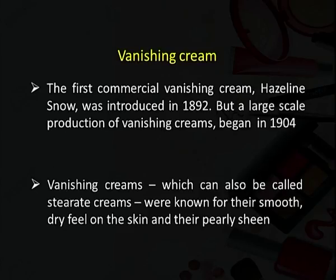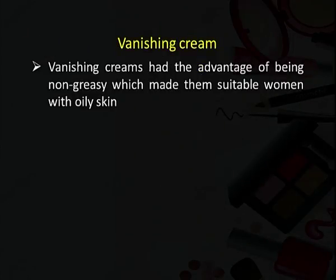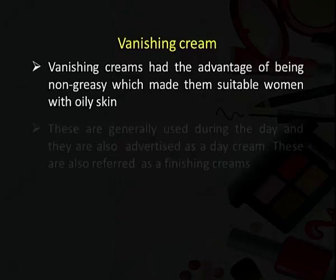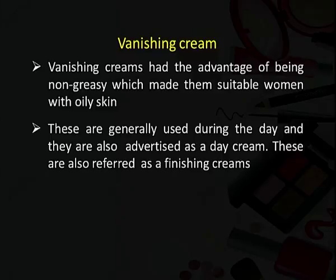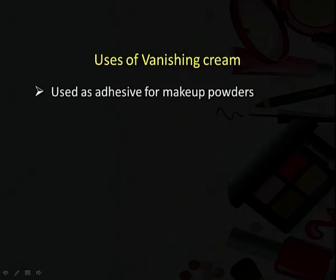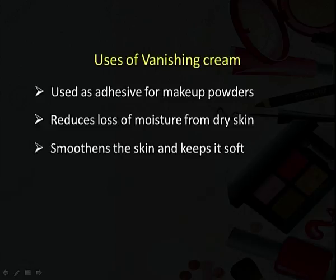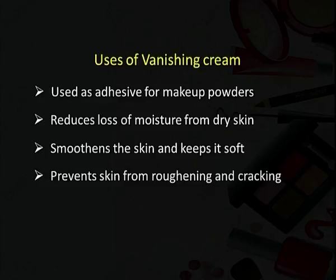Vanishing creams, also called stearate creams, were known for their smooth, dry feel on the skin and their pearly sheen. They had the advantage of being non-greasy, making them suitable for women with oily skin. They are generally used during the day and advertised as a day cream. Colored vanishing creams in white, flesh, rachel and natural shades are also used as makeup foundation creams. Uses include: as an adhesive for makeup powders, reducing moisture loss from dry skin, smoothening the skin, keeping it soft, and preventing skin roughness and cracking.